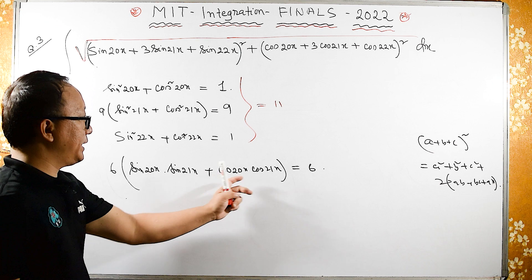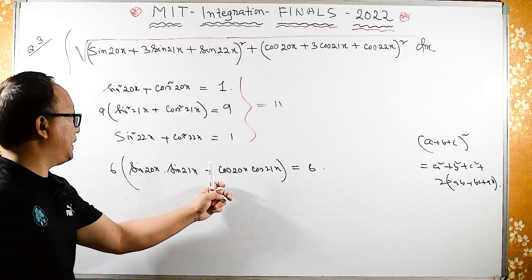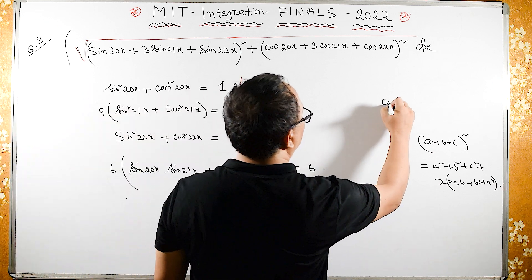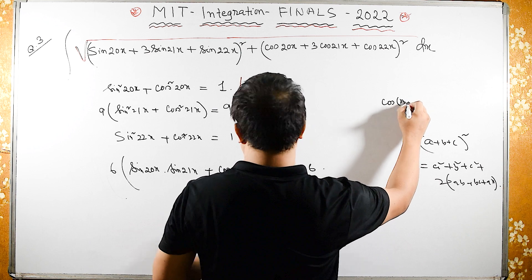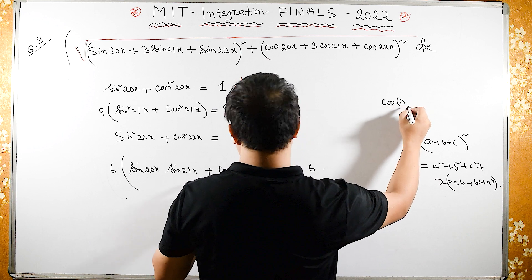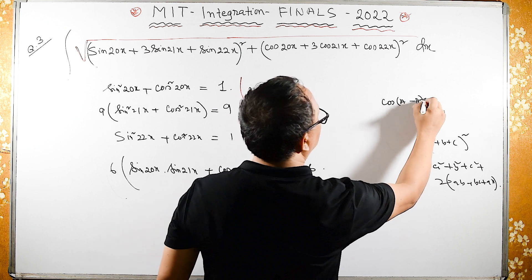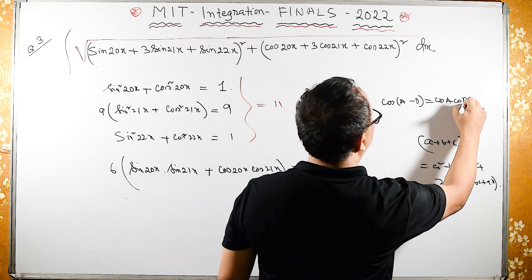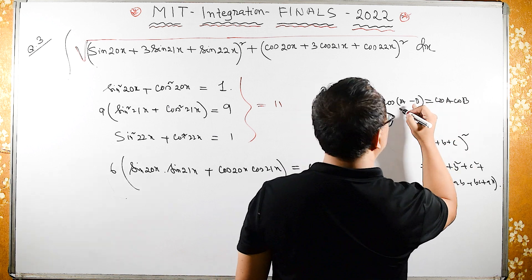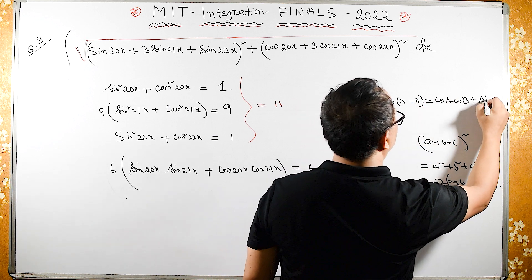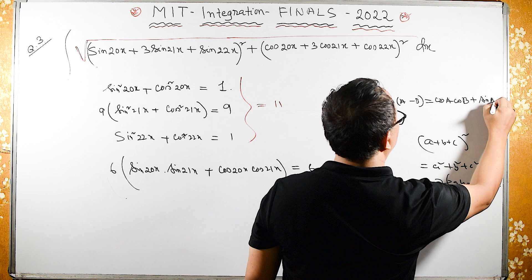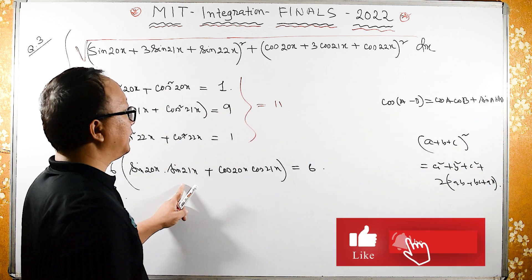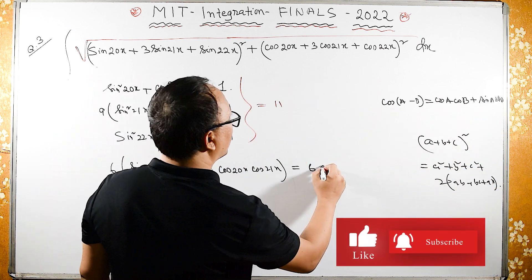We know that cos(a)cos(b) + sin(a)sin(b) = cos(a - b). So this expression equals 6 times cos of (21x - 20x), which gives us 6 cos(x).